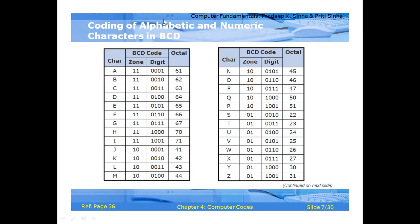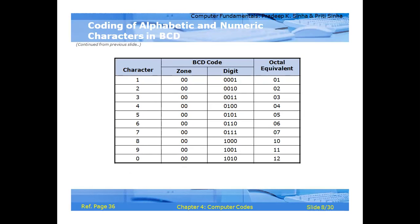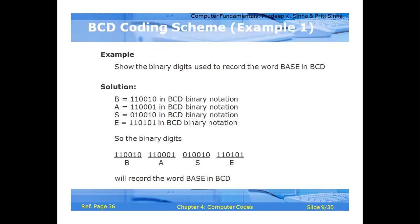BCD codes are used for the coding of alphabets and numeric characters. In BCD coding, characters from digits 0 through 9 and alphabetic characters are represented using the six-bit BCD scheme.